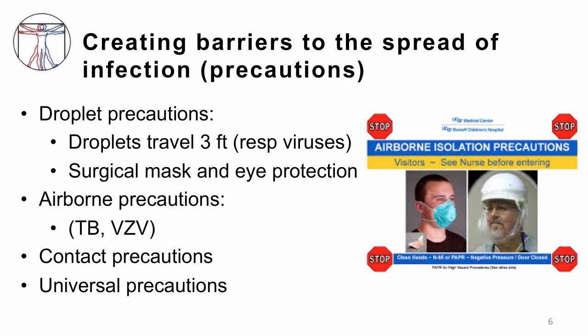Next, let's talk about creating barriers to the spread of infection, otherwise known as different types of precautions. As an infectious diseases doctor taking care of patients with different types of infections, I need to protect myself. Droplet precautions are used when patients have a respiratory virus like influenza. Patients can spread that virus by droplets when coughing, and it's felt that spread occurs up to about three feet away. Wearing a mask to cover your mouth and nose, as well as eye protection, makes infection very unlikely. Good hand hygiene is also important, as touching contaminated surfaces and then touching your mouth or eyes can also lead to infection.